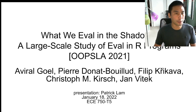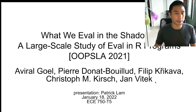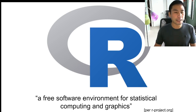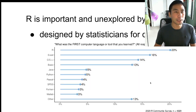This week we're going to talk about "What We Eval in the Shadows," a large-scale study of eval in R programs. This work appeared at OOPSLA 2021 by Avril Al-Ghual et al. The context is the R project, which describes itself as a free software environment for statistical computing and graphics. R is an important language, and yet it's largely unexplored by programming languages researchers.